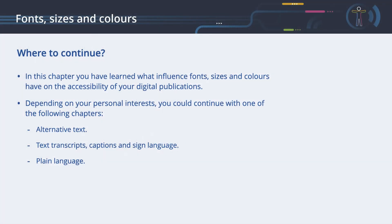In this chapter, you have learned what influence fonts, sizes, and colors have on the accessibility of your digital publications. Depending on your personal interests, you could continue with one of the following chapters.